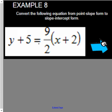We need to convert this equation from point-slope form to slope-intercept form. The first thing we're going to do is distribute our slope.